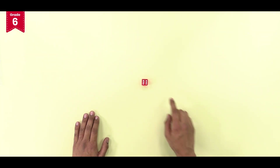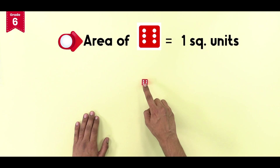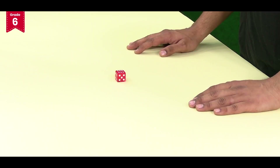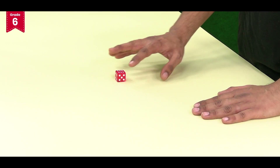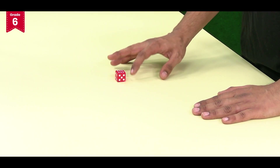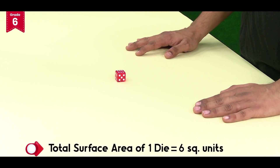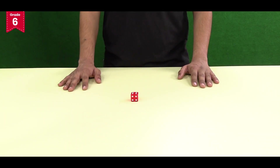If we take the area of one square face equal to one square unit, then the area of all the six faces of the die will be equal to six square units, as all the faces of the die are of equal areas.